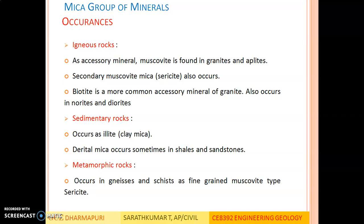Occurrence: in igneous rocks, this mica group of minerals occurs as an accessory mineral. Muscovite is found in granites and aplites; secondary muscovite called sericite also occurs. Biotite is a more common accessory mineral of granite and also occurs in norites and diorites. Since muscovite is a non-metallic economic mineral, it is found in limited quantity. In sedimentary rocks, mica occurs as illite — a variety of clay — and detrital mica occurs in shales and sandstones. In metamorphic rocks, mica occurs in gneiss, schist, and as fine-grained muscovite-type sericite.